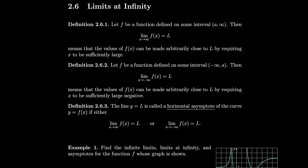Similarly, if f is a function defined for all numbers less than a, then the limit of f as x approaches minus infinity equals L means the values of f can be made arbitrarily close to L by requiring x to be sufficiently large negative. The line y equals L is called a horizontal asymptote if either of these limits equals L. So whenever a limit at infinity exists, that limit value becomes a horizontal asymptote.